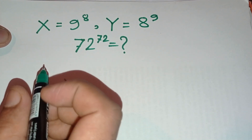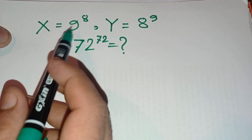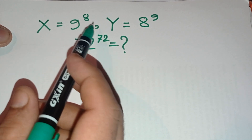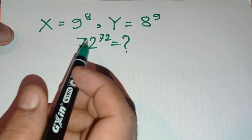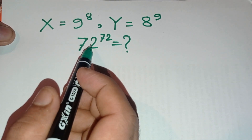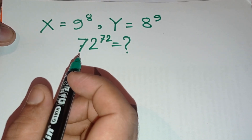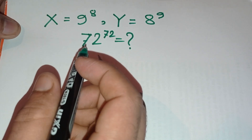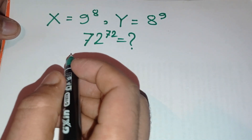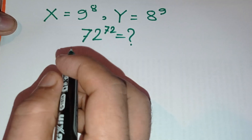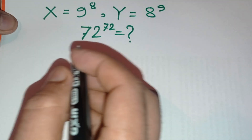Hello viewers. Today's question is: x equals 9 to the power 8, y equals 8 to the power 9. What is the value of 72 to the power 72? So let's start. As we know, 8 times 9 equals 72.